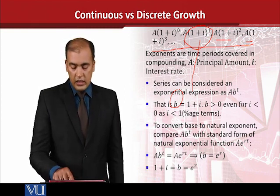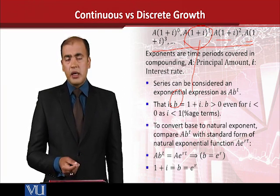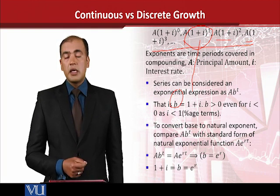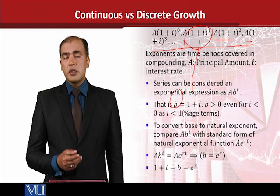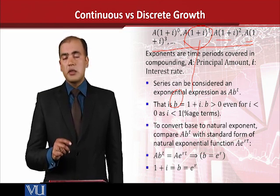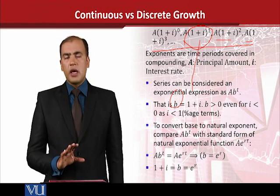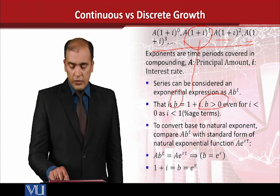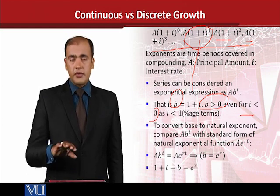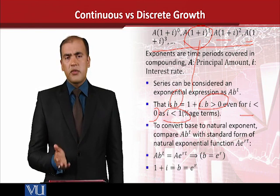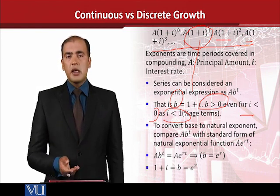As you can see, we assumed B = 1 plus i, and now we want to describe the nature of B — what will its value be like. B is greater than 0, and that is quite understandable, because B equals 1 plus I, where I is the interest rate. When we talk about the rate, it is in percentage terms, meaning it will be less than 1. For example, 5% equals 0.05, which is less than 1. And even if I is negative — say 1 plus (minus 0.05) — it will still be a positive value; it will not become negative. Therefore, B will be greater than 0, a positive value, because I will be less than 1, and when we take the difference from 1, it will convert 1 into a fraction but will not make it negative.